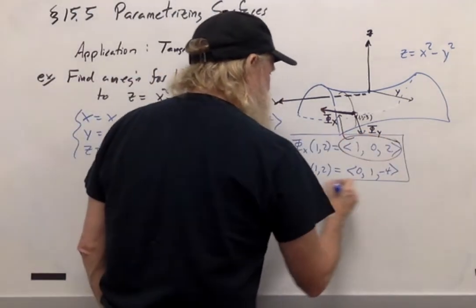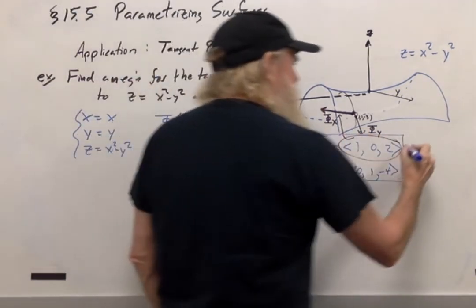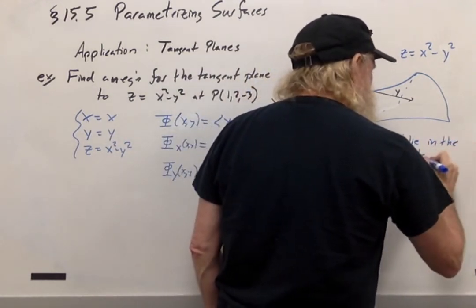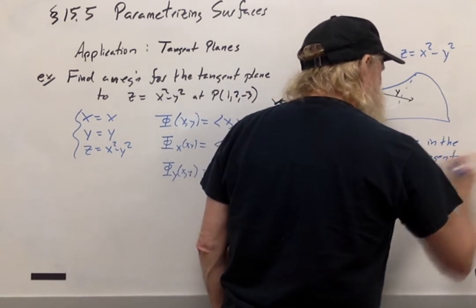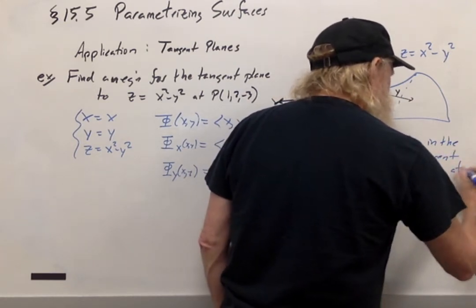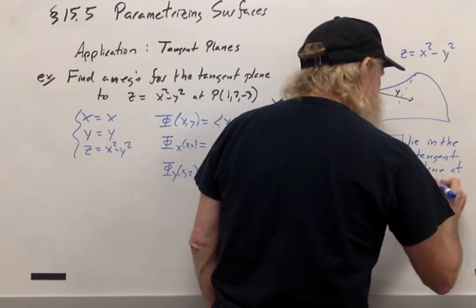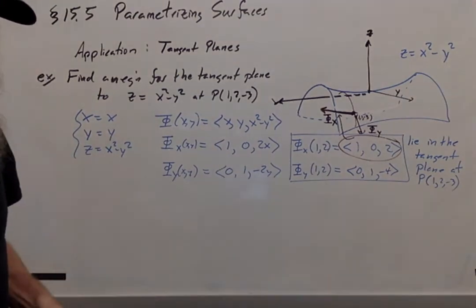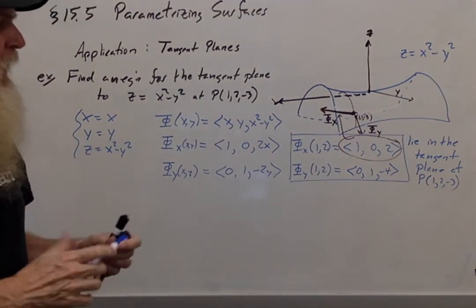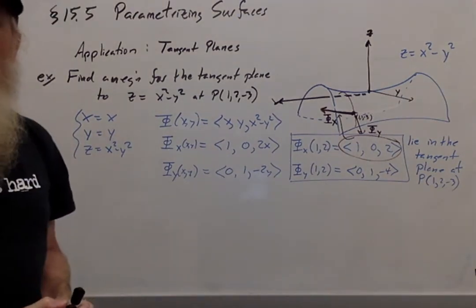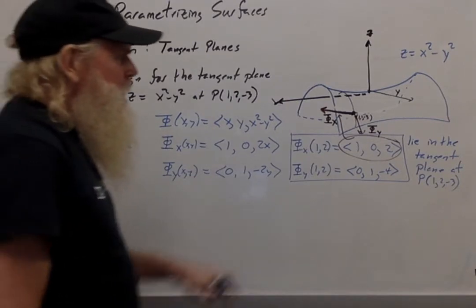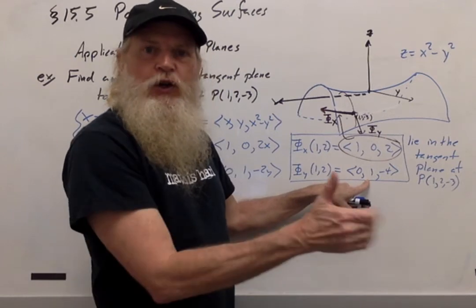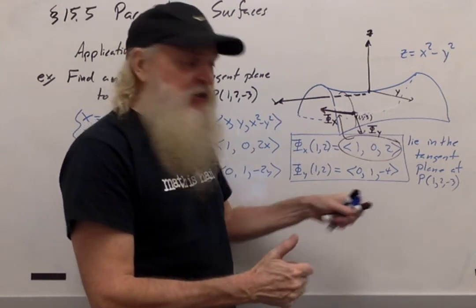So these two vectors lie in the tangent plane at the point P. To write the equation for the tangent plane, though, we need a normal vector to the tangent plane. But if I have two vectors that are in the tangent plane, then their cross product is going to be perpendicular to the tangent plane.